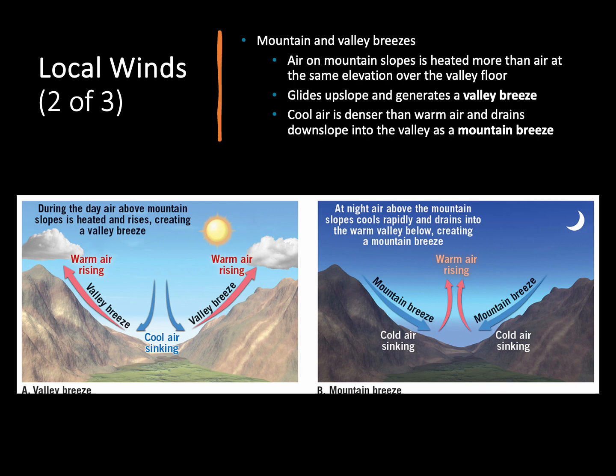At night, a mountain breeze develops. The air along the slopes of the mountain cools off very quickly once it gives off all the radiation received from the sun during the day. As it cools off, that air contracts, gets denser, and starts sinking down the sides of the mountain, moving into the valley. Because lots of air is entering the valley, some has to escape, so that warm escaping air rises up toward the center of the valley, completing the cycle.